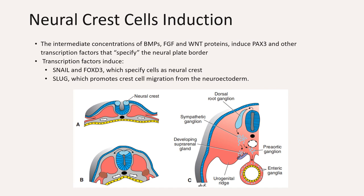In the case of BMPs, if the ectoderm is exposed to high levels of BMPs, then it will develop into an epidermis. If the ectoderm is exposed to low levels of BMPs, it develops into a neuroectoderm and becomes a neural tissue. Some cells at the borders are exposed to intermediate concentrations of BMPs, and these are the cells that will later on become the neural crest cells. This also involves signaling factors such as FGF and WNT proteins, and even PAX3, which specify the neural plate border and induce neural crest cell formation.